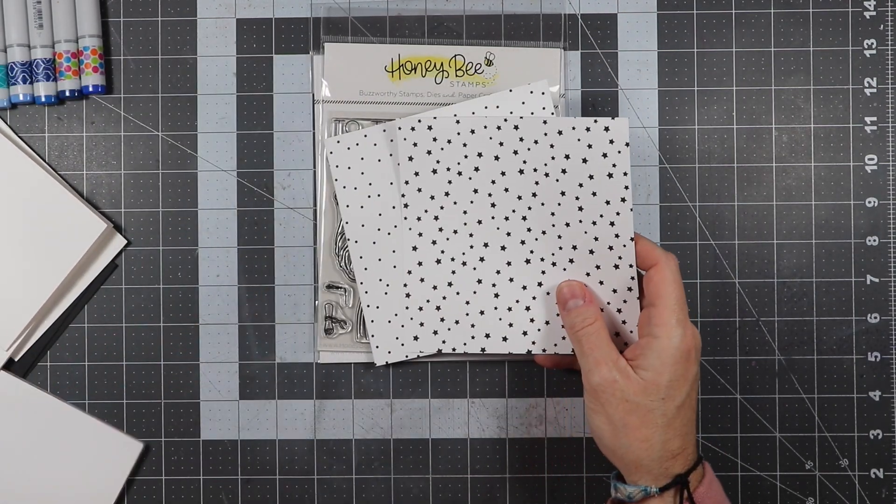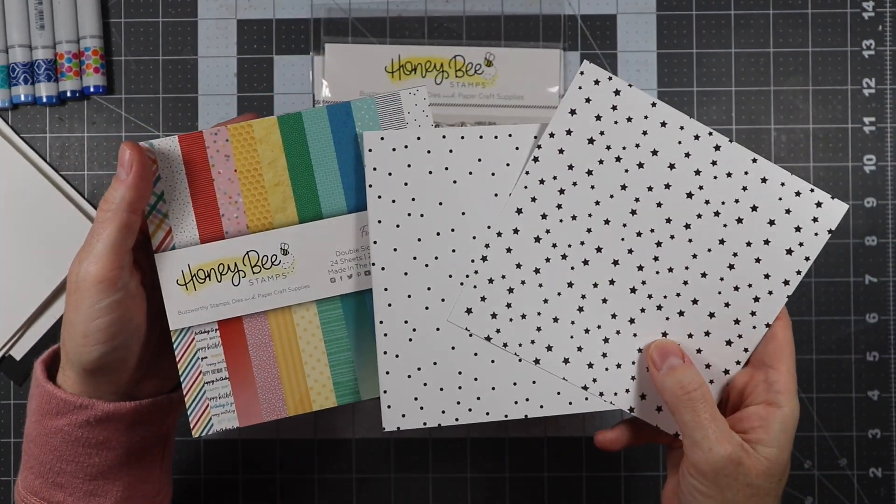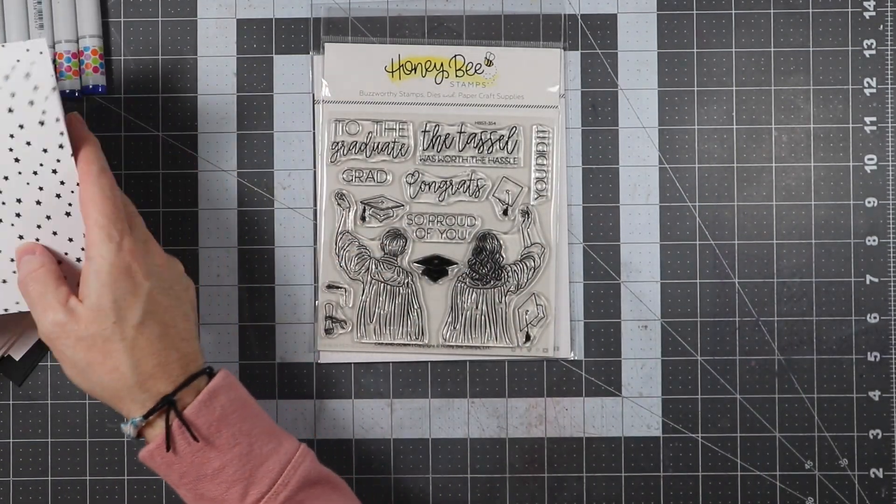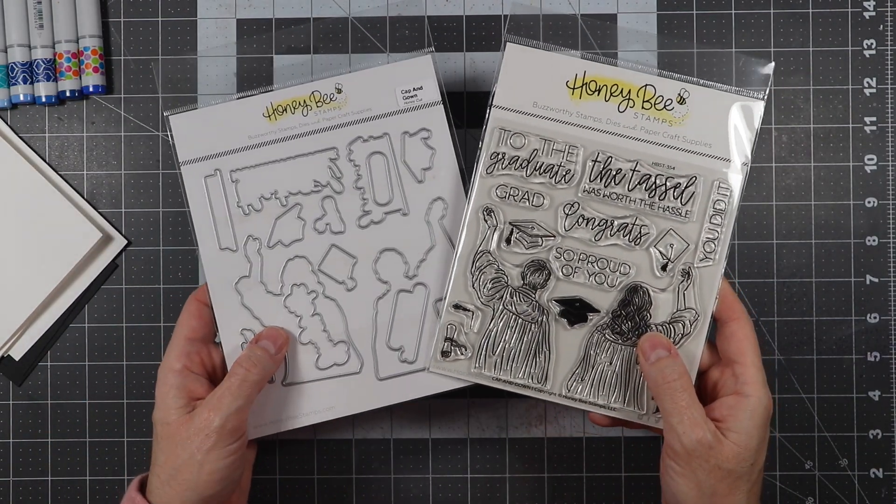We're also going to be using some pattern paper from the Funfetti birthday pack that just recently released. We're going to be using black and white, and we're also going to be using the stamp set and the matching die set of caps and gowns. So let's go ahead and get started making this card.